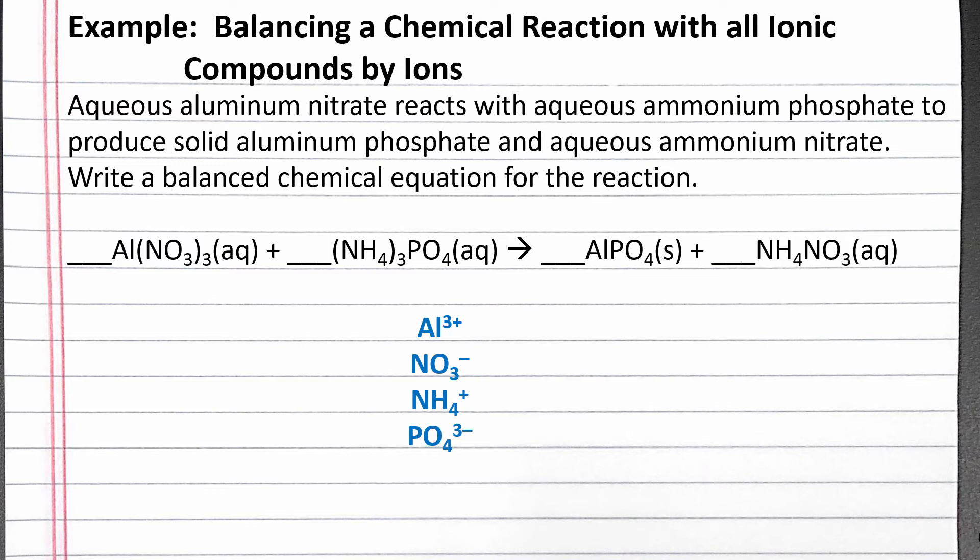I'll start with Al3+. Right now we have one aluminum ion on each side, so we can put a one coefficient in front of aluminum nitrate and aluminum phosphate.